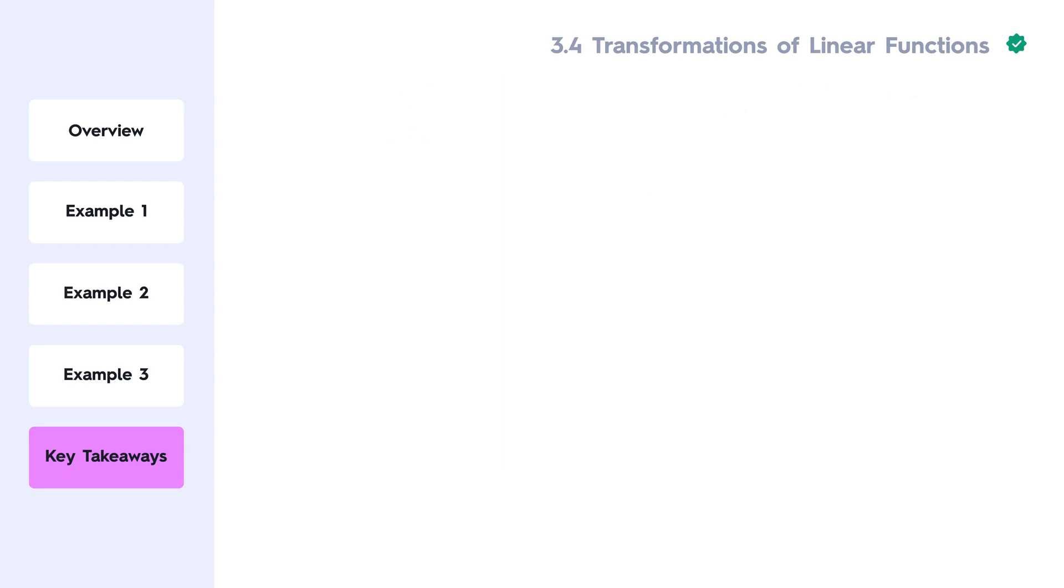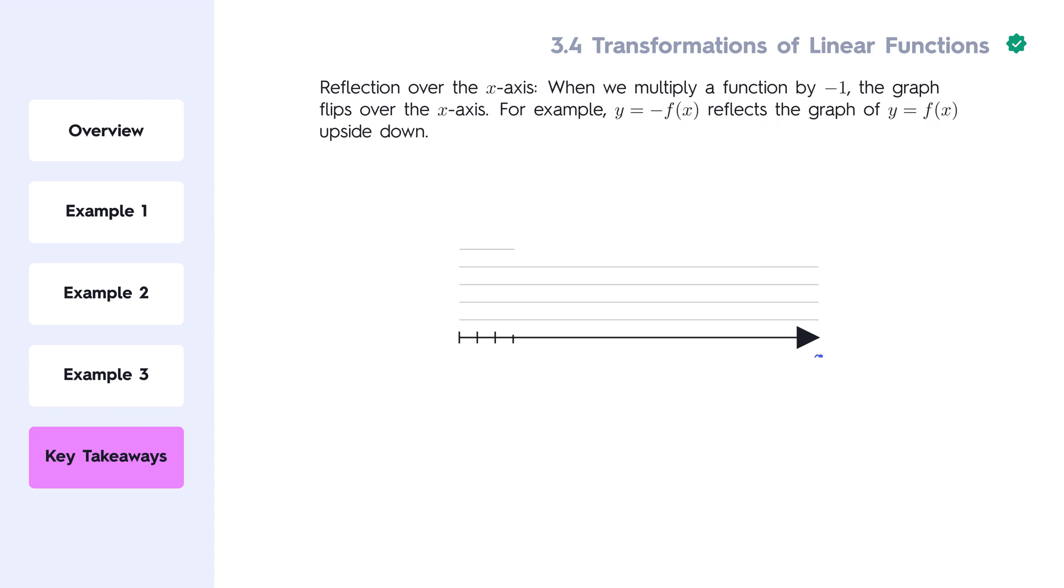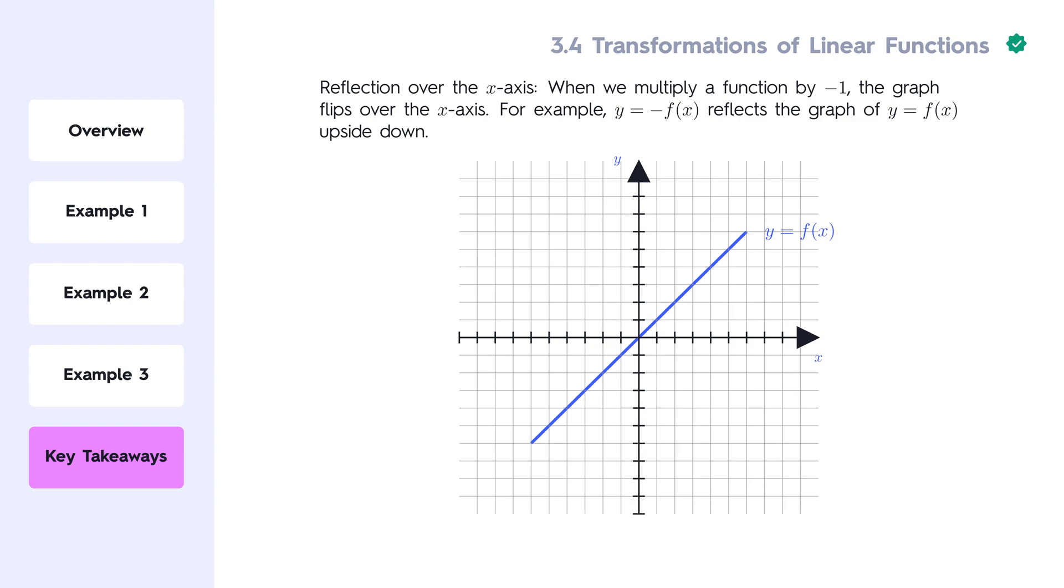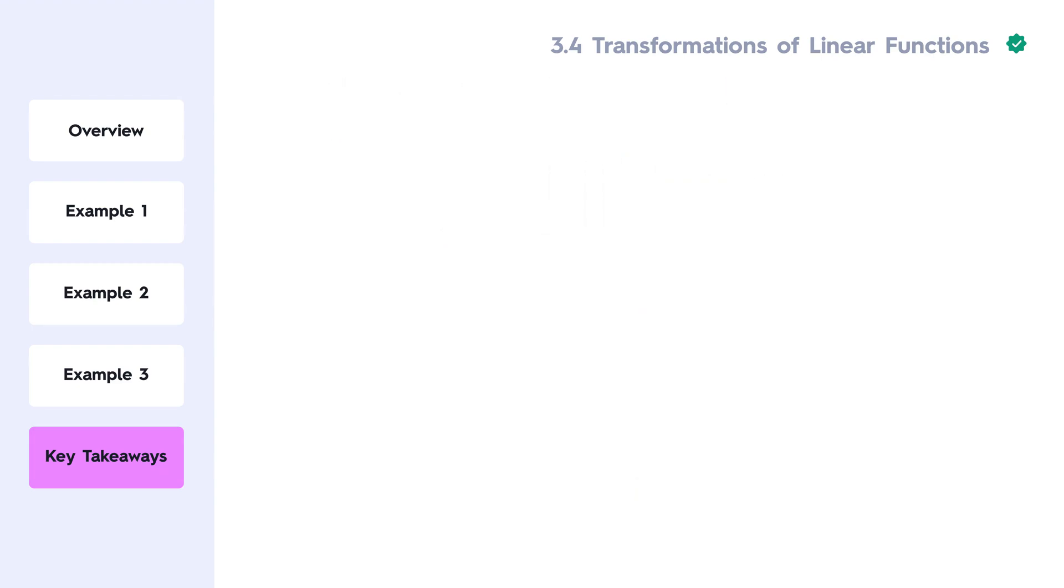We also covered how reflections work. When we multiply a function by negative 1, the graph flips over the x-axis. For example, y equals negative f of x reflects the graph upside down. By practicing these concepts, you can confidently approach any test problem involving transformations of linear functions.